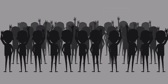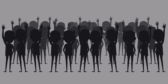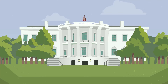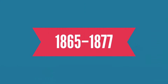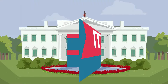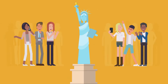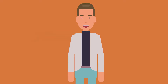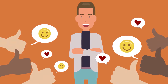The Confederacy collapsed, slavery was abolished, leaving 4 million black slaves free, and the process of restoring the Union was underway during the Reconstruction Era, 1865 to 1877. The war had a significant impact on the identity of the United States, by leading to freedom for African Americans in the Reconstruction Era and by helping to create a more unified national identity.